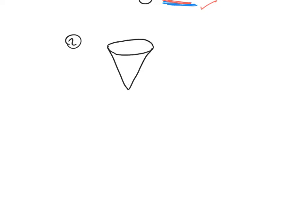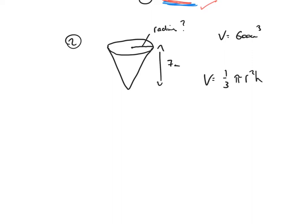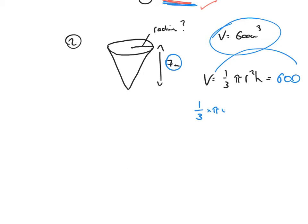Let's try example two. I have another conical shape and again I'm looking to find the radius. The height of the cone is 7 centimetres, and the volume of the cone is 600 cubic centimetres. The volume of a cone is one third pi r squared h, and that equals 600. The height is 7, so one third times pi times r squared times 7 equals 600.